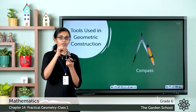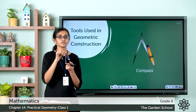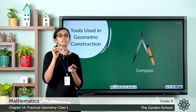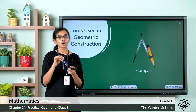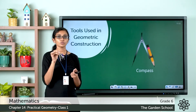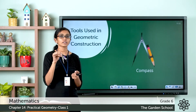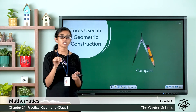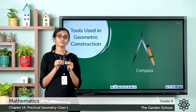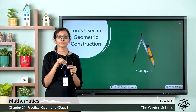The sharp point keeps the compass fixed onto a flat surface while taking measurements or drawing circles or arcs. A compass is used to draw or scribe circles and draw parts of circles called arcs. Both arms of the compass are movable about the hinge.